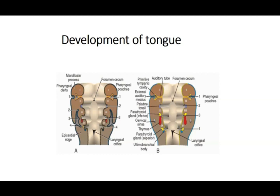When developing the tongue, you should recollect its nerve supply — what areas are getting nerve supply from where: what is sensory, what is general sensory, what is motor. This is important because it reflects back to the origin of the tongue.